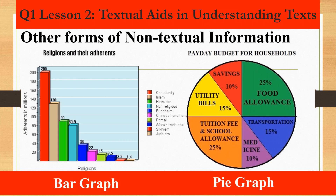The pie graph is used to show percentages of a whole and represents percentages at a set point in time. Unlike line and bar graphs, a pie graph or pie chart does not show changes over time. For example, when you are asked to budget your money for a month, this type of material is the most appropriate nonlinear material to use.